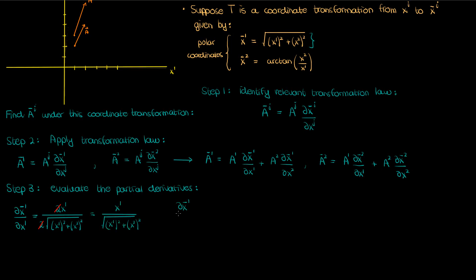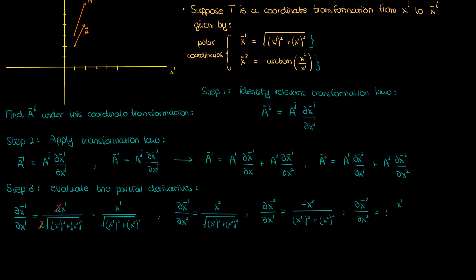We can use the same technique to evaluate the partial derivative of x super 1 bar with respect to x super 2, and we'll find the following, this time with x super 2 in the numerator. Then we do the partial derivatives of the second transformed coordinate x super 2 bar by examining the second equation. With respect to x super 1, the partial derivative of x super 2 bar is the following — we've basically taken the derivative of the arctan here. I won't go through all the algebra, but ultimately you can show that result. And with respect to x super 2, the partial derivative of x super 2 bar is just the following. So we've now found all the partial derivatives with respect to the various coordinates.